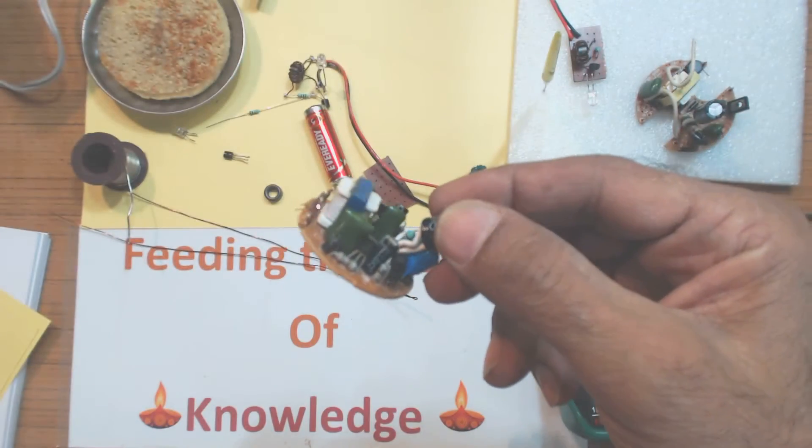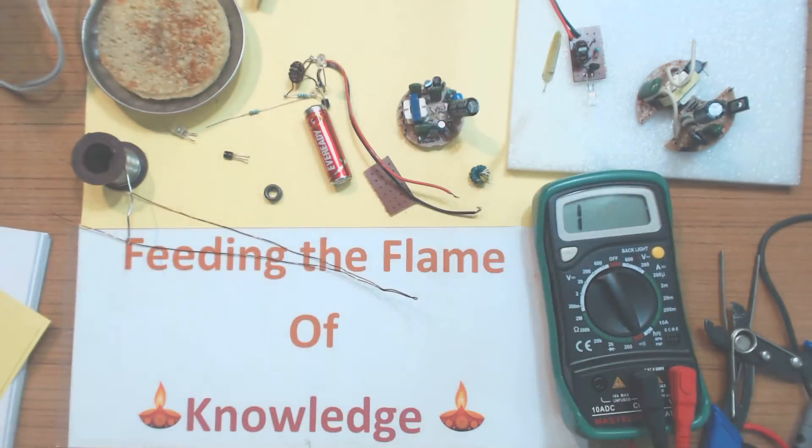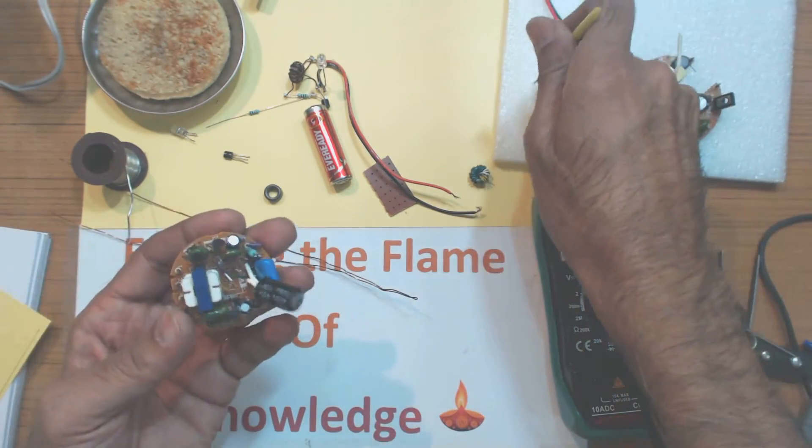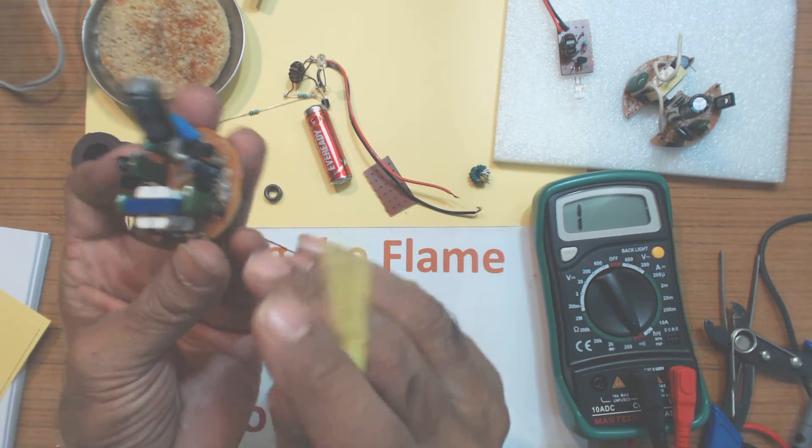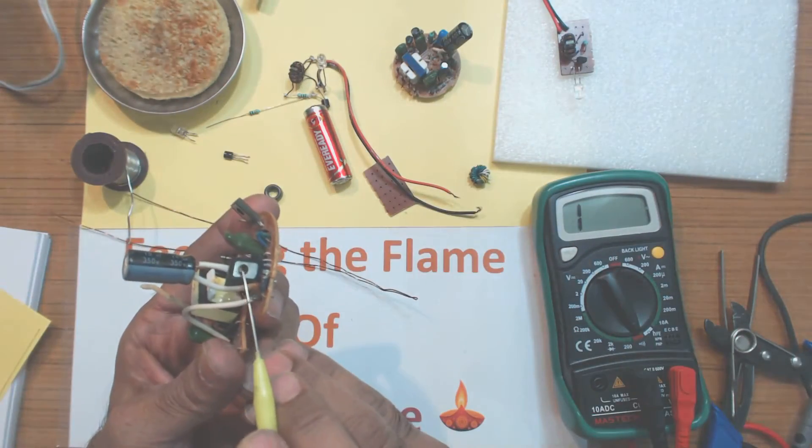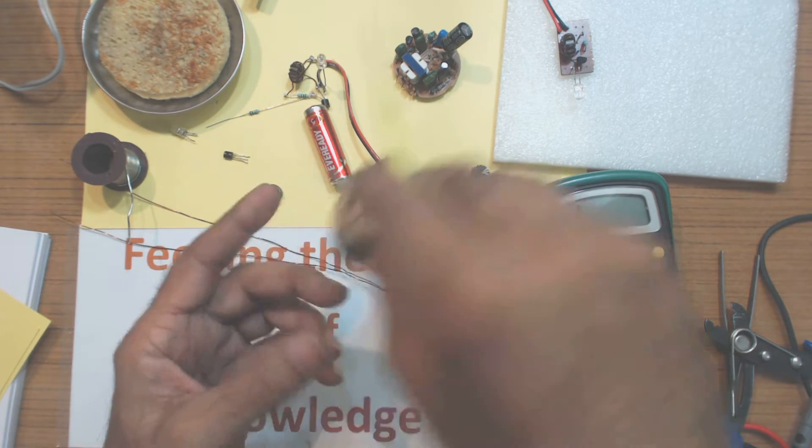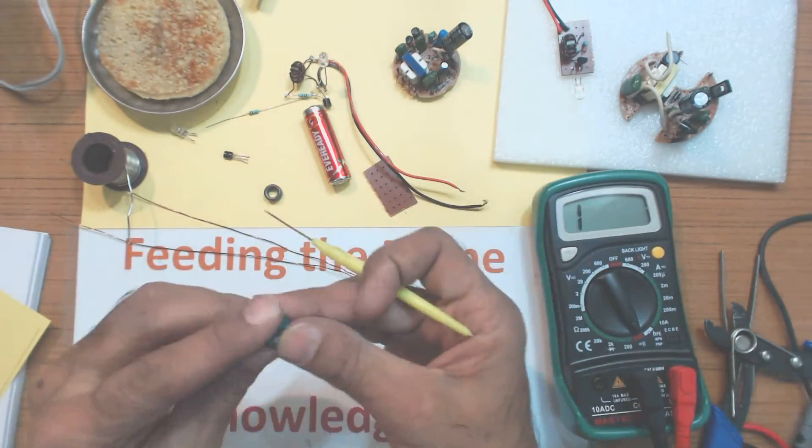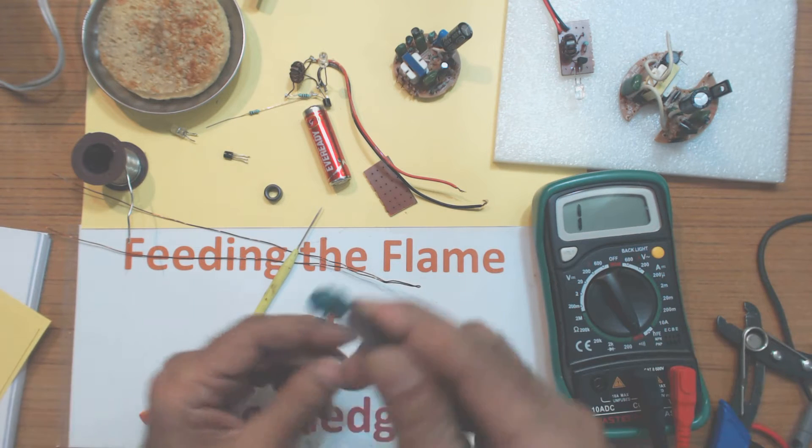This is a PCB which I have taken out from a discarded CFL. One part is a transistor which is here, and if it is a high wattage CFL then the transistor is a power transistor looking like this in a different package. You can use any of these and the other part is, this I have already removed, it is a toroidal ferrite core.